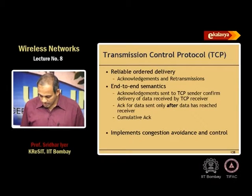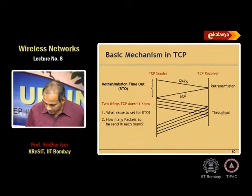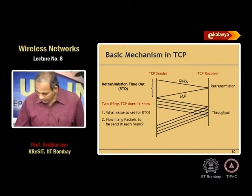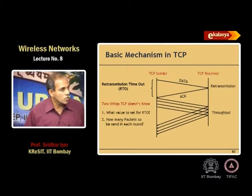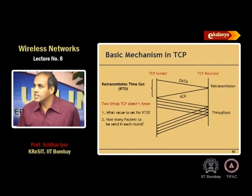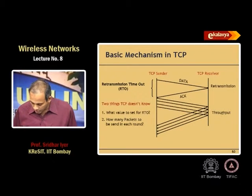TCP basically does reliable ordered delivery. It has a notion of acknowledgements and retransmissions, and it maintains end-to-end semantics. Acknowledgements are sent only after the data has reached the receiver. It implements congestion avoidance and congestion control. The basic mechanism in TCP works the same whether connected through wired or wireless links, single-hop or multi-hop.